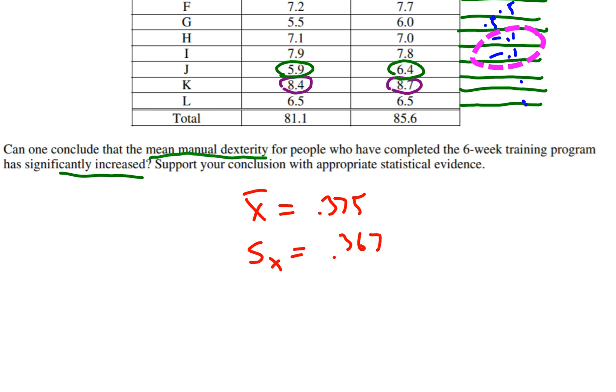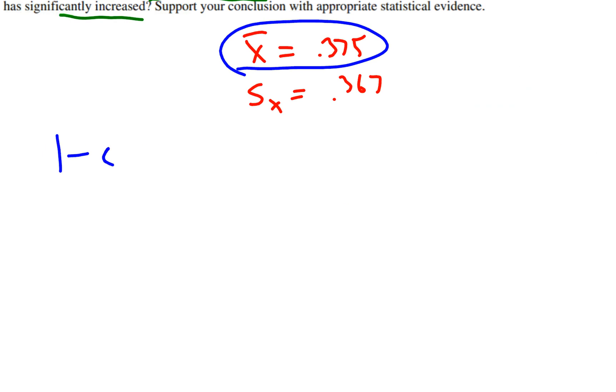So the question is, is this number here far enough away from zero for you to be convinced that this program is actually effective? It's time to do what's known as a one-sample matched pairs t-test.